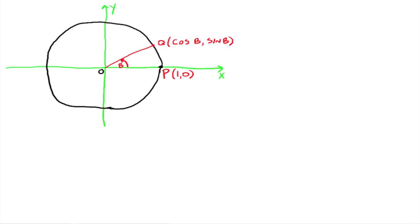We're going to begin by drawing a picture of our unit circle. On the unit circle, we're going to call the origin O, and this point out here we're going to call P, with ordered pair (1, 0), because it's the unit circle and the distance from the origin to the spot on the unit circle is 1.